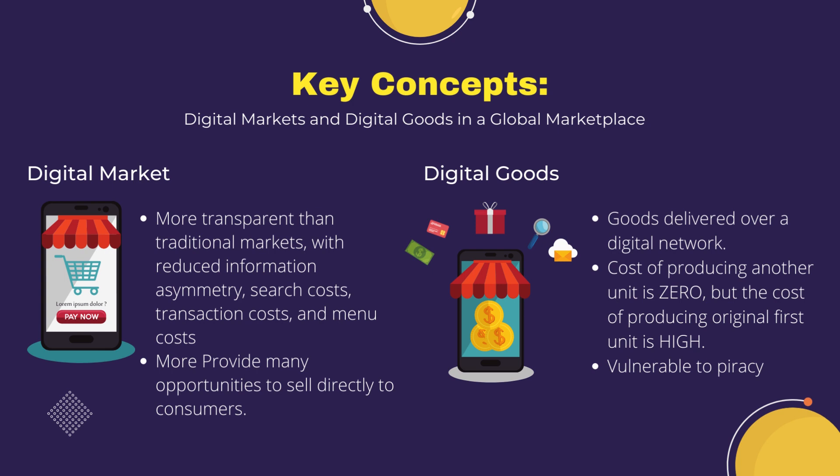Digital markets are also very flexible and efficient because they operate with reduced search and transaction costs, lower menu costs, greater price discrimination, and the ability to change prices dynamically based on market conditions. This provides many opportunities to sell directly to consumers by bypassing intermediaries such as distributors and retail outlets, which can significantly lower purchase and transaction costs. On the other hand, digital goods such as music, video, software, and books can be delivered over a digital network. Once a digital product has been produced, the cost of delivering it digitally is extremely low, such as streaming music or streaming movies.